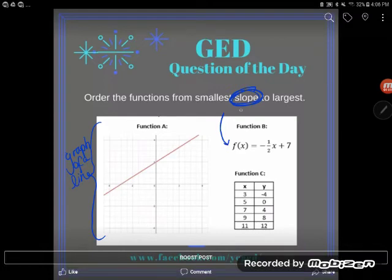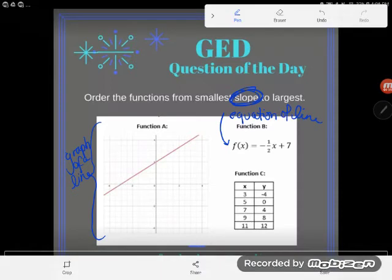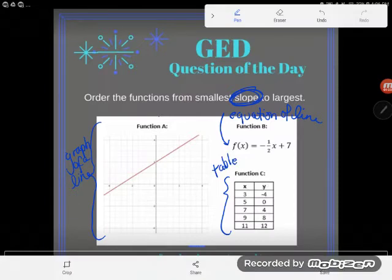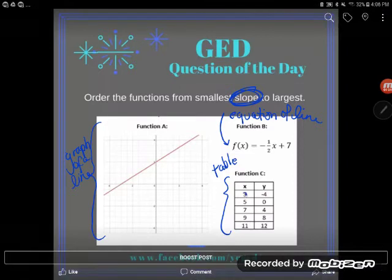So I need to know how to find slope off of a graph. Here I've been given the equation of a line, so I need to know how to find slope when given the equation of a line. Now here what have I been given? Yes, it's a table of values.